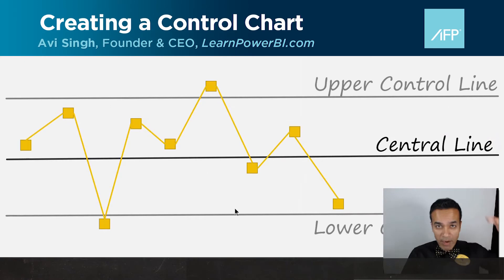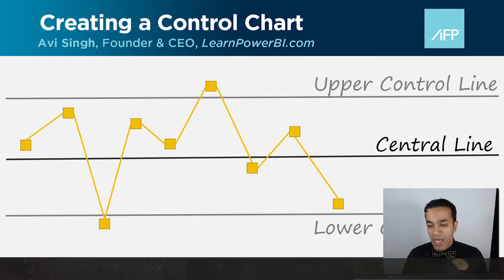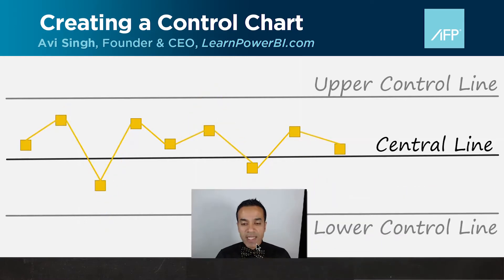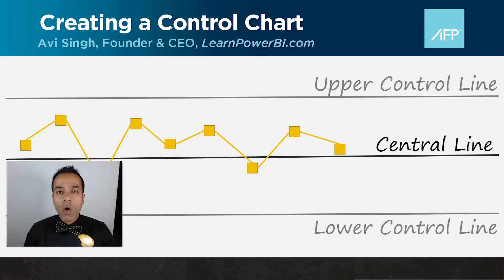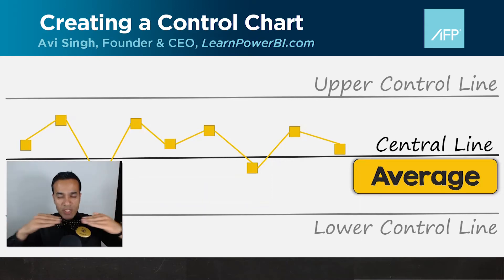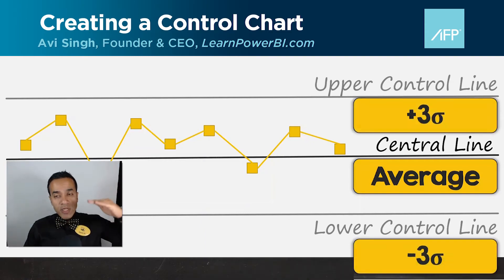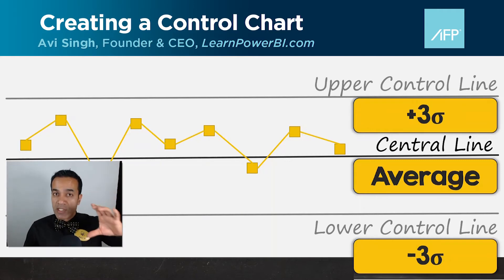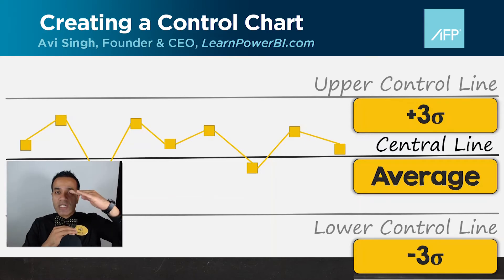If you were to plot out where I end up bowling over time across the different frames, I'm all over the map — so that process is not in control, not stable, very variable. A controlled, stable process would have all observations tightly around the central line. The central line is calculated as an average of a prior period. The upper and lower control lines are determined using sigma, or the standard deviation — typically plus or minus three sigma, although they can be tighter at plus or minus two or one sigma, indicating a very finely tuned process. Plus or minus three sigma is the default.